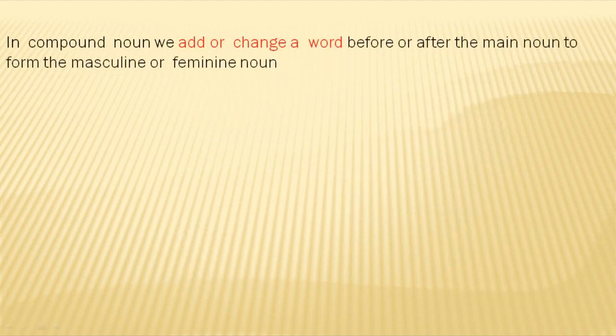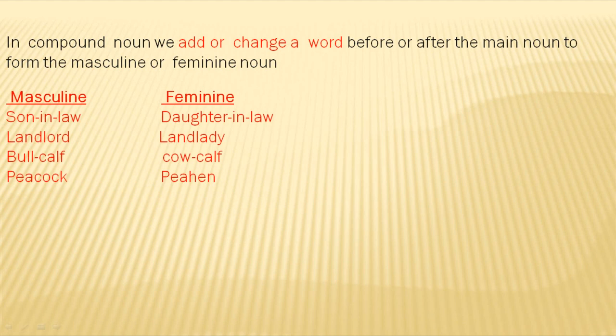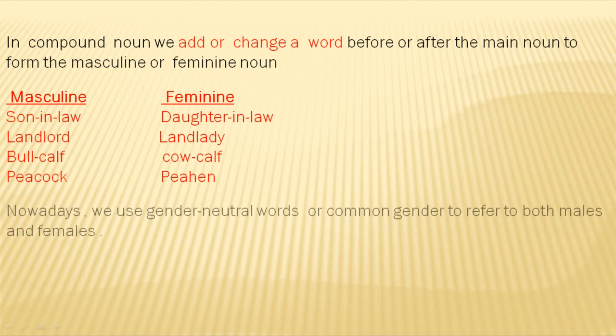In compound nouns, we add or change a word before or after the main noun to form the masculine or feminine noun. For example: son-in-law becomes daughter-in-law in feminine gender. Landlord becomes landlady, bullcalf becomes cow-calf, peacock becomes peahen in feminine gender.